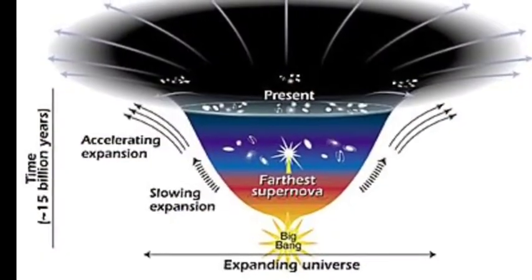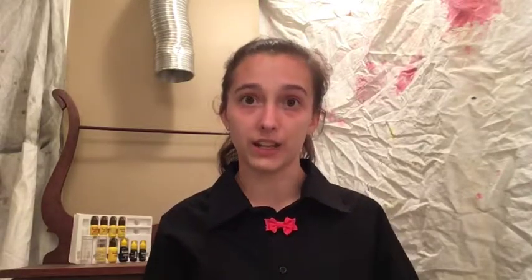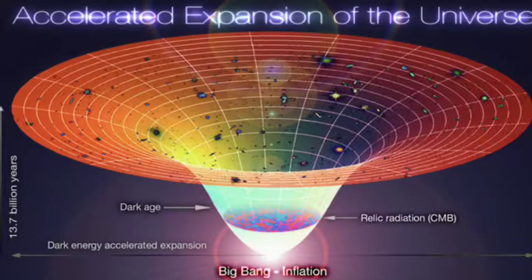One such anomaly involves the accelerating expansion of the universe. It was predicted that at a certain point, the universe would slow and eventually stop its expansion because the gravity of existing matter would overcome the outward force. However, the opposite has been observed — instead of slowing, the expansion is continuing to accelerate. The only explanation is that some additional force must be propelling this expansion, which was deemed dark energy.